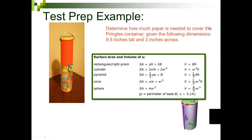Resoundingly the answer is cylinder — excellent! The next step is to find the appropriate formula. We have a snippet of the 2014 GED formula sheet. Since we already determined it is a cylinder, we need to decide if we're going to use the formula for SA (surface area) or V (volume). Please chat your answer.